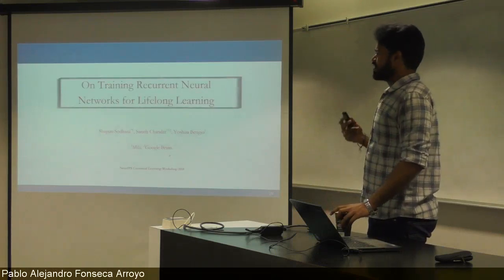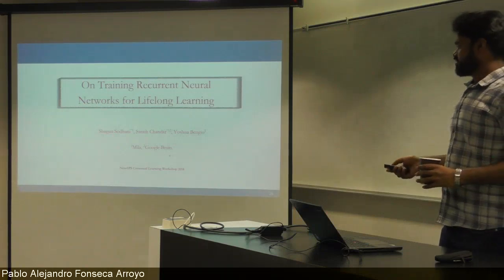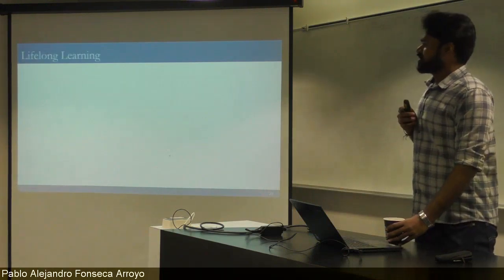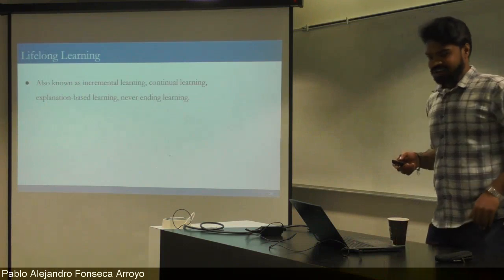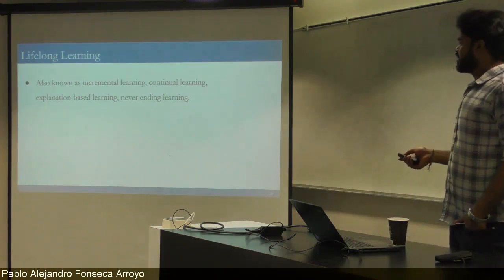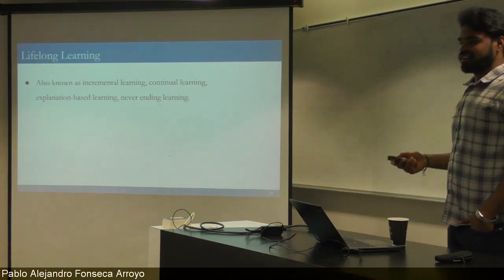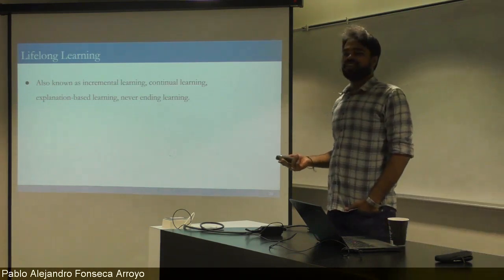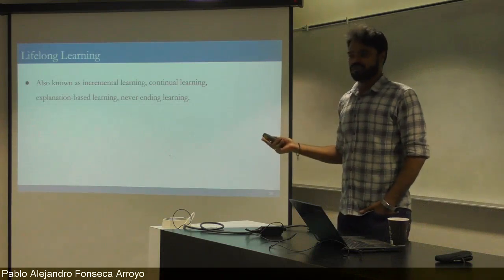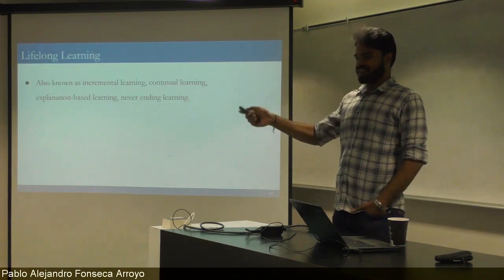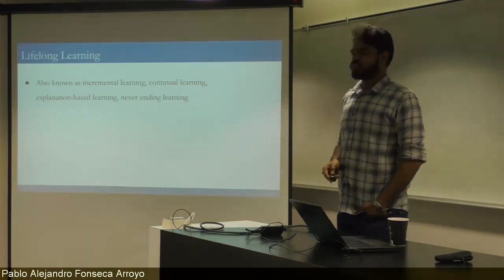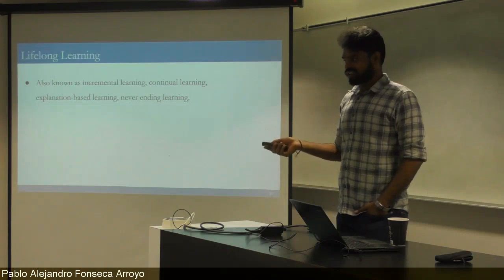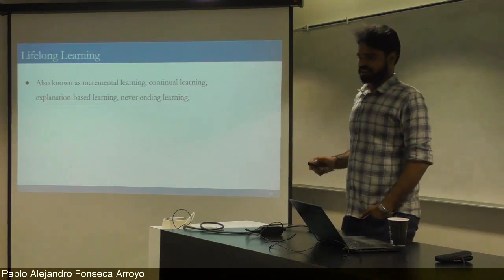Part 2 is about training recurrent neural networks for lifelong learning — joint work with Shagun and Yoshua, to be presented at NeurIPS Continual Learning Workshop. Lifelong learning is one of the grand themes of AI, also known as incremental learning, continuous learning, never-ending learning. The general idea: a single neural network learning an infinite series of tasks one by one. You may or may not see the same task again. There's no separate training or testing phase — you perform, learn, perform, learn continuously.